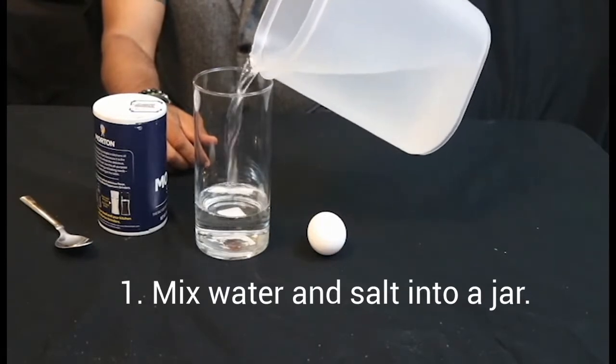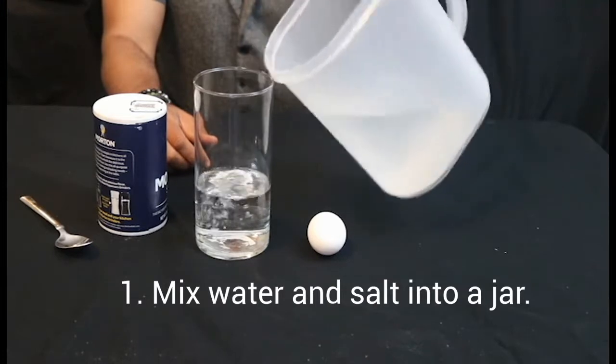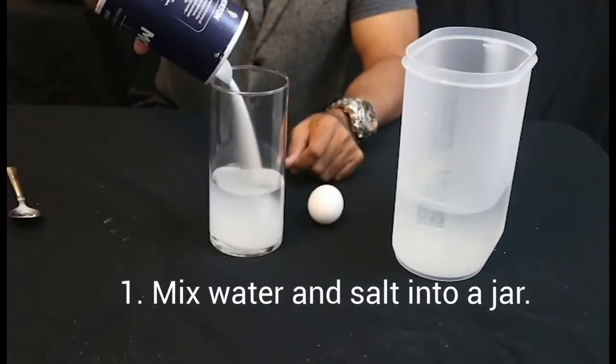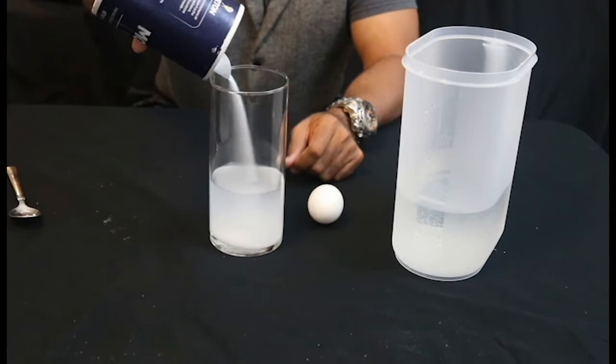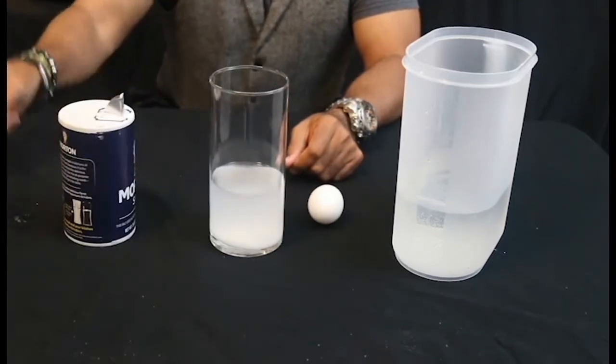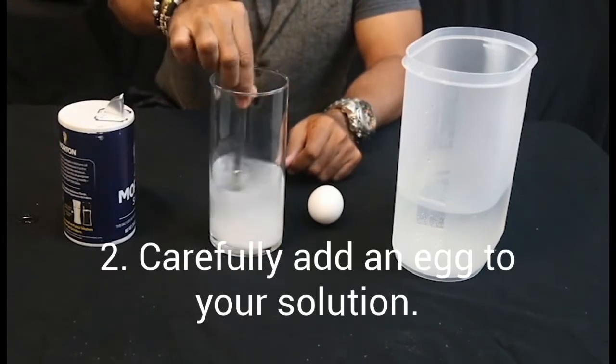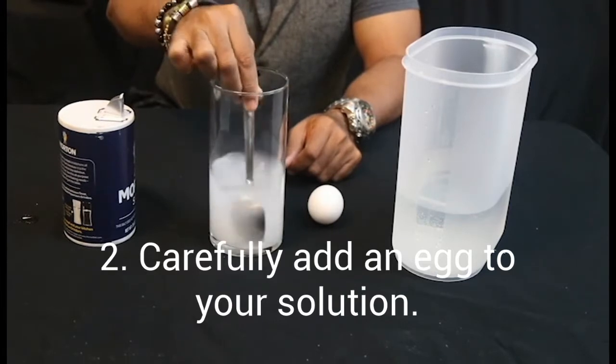You want to fill one jar with complete water. Nothing else added to it. The second jar, we want to add water, one third of the way full, then add salt.